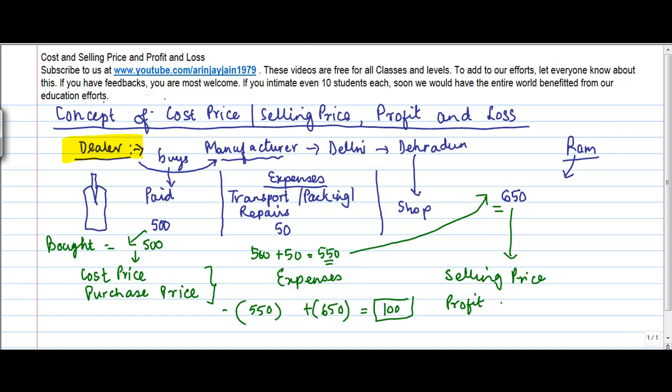And it is normally calculated as the difference between the selling price less the cost. Now cost basically will comprise of your cost price plus your overheads. So selling price was 650 minus 500 which is the cost price minus 50. You could have done it like this, so 650 minus 550, 100. So this is basically your profit.